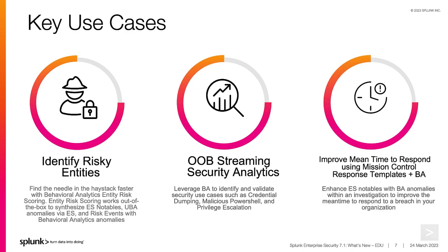Key use cases for cloud-based streaming analytics include identifying risky entities — find the needle in the haystack faster with behavioral analytics entity risk scoring. Entity risk scoring works out-of-the-box to synthesize ES notable events, UBA anomalies via ES, and risk events with BA anomalies. Out-of-the-box streaming security analytics leverages BA to identify and validate security use cases such as credential dumping, malicious PowerShell, and privileged escalation. Improve mean time to respond using mission control response templates with BA, enhancing ES notables with BA anomalies within an investigation to improve the MTTR to a breach in your organization.